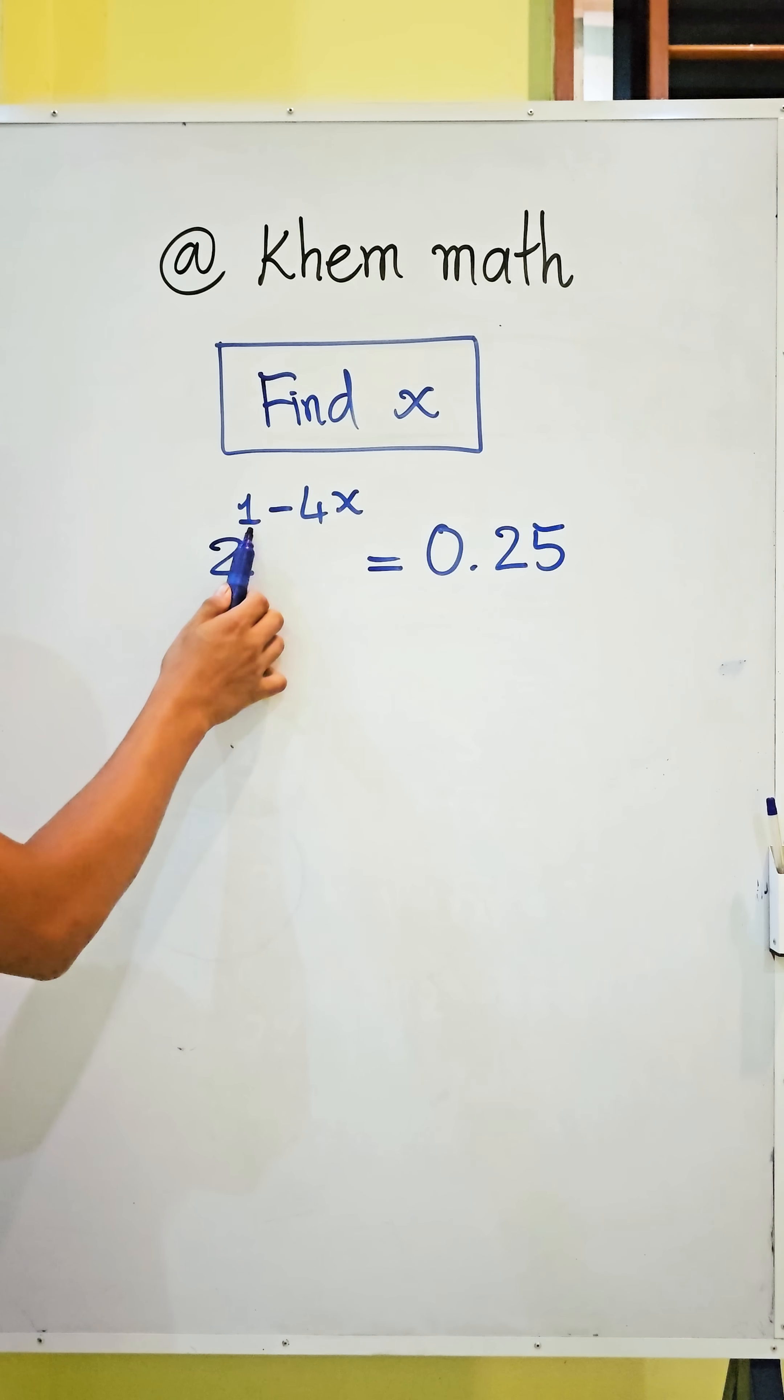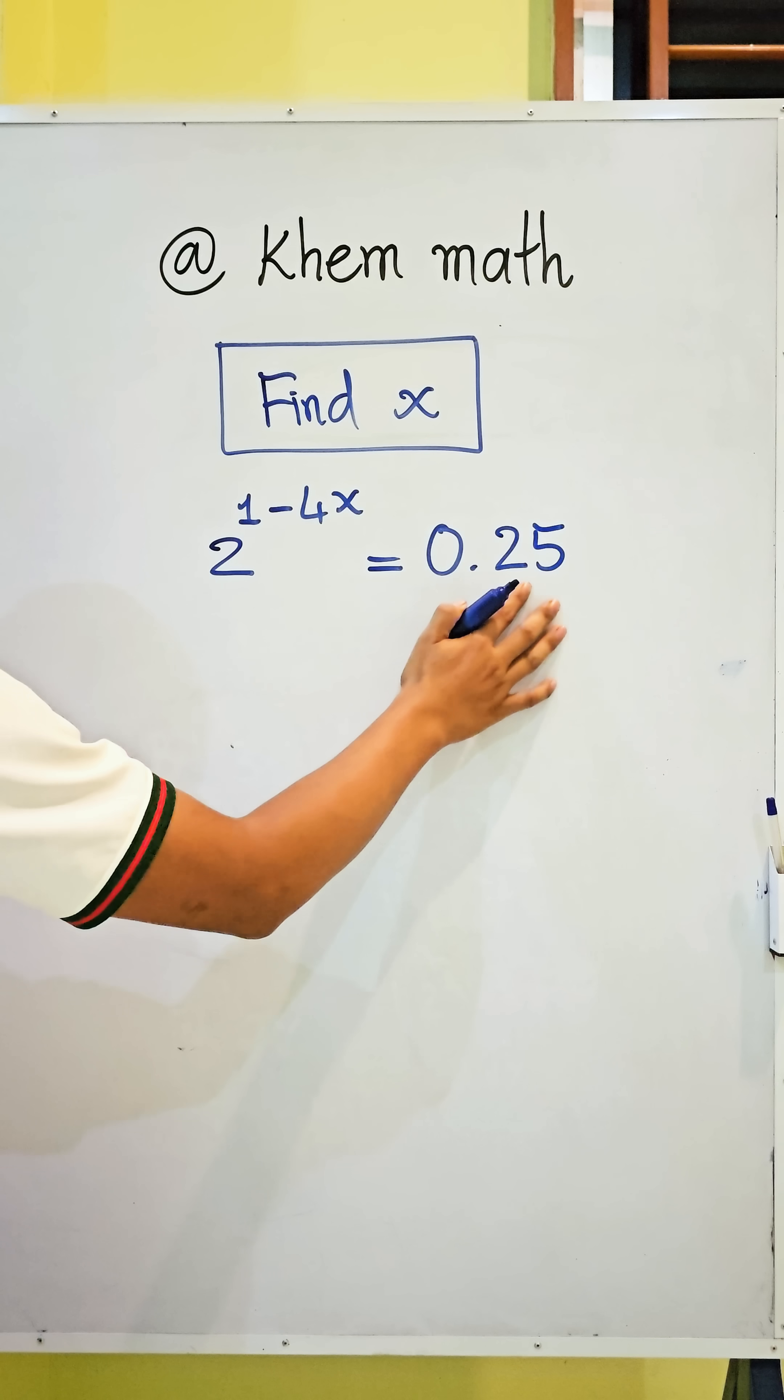Find x. 2 to the power of 1 minus 4x equals 0.25. Here, 0.25 can be written as 25 divided by 100.